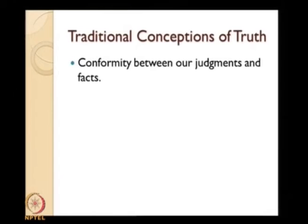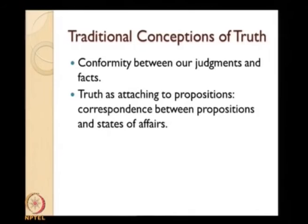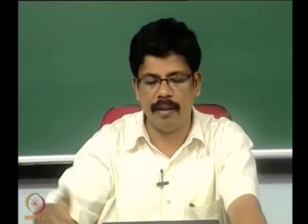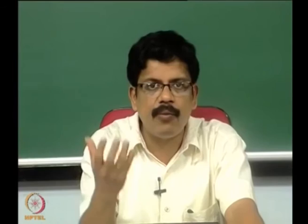Now let us see truth as unconcealment. Traditional conceptions of truth say that conformity between our judgment and fact is central — Heidegger opposes this. Heidegger has a very different conception of truth where he understands truth as aletheia, or unconcealment. Truth as attaching to propositions — correspondence between propositions and states of affairs — is a traditional conception. Heidegger says even this understanding of truth is derivative from a more fundamental understanding of truth as self-manifestation, revelation, or disclosure.